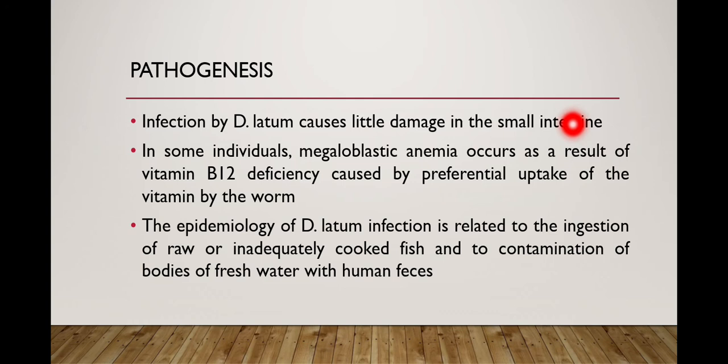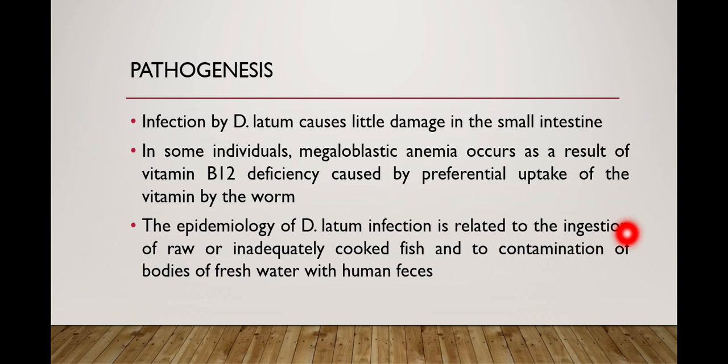Regarding pathogenesis: infection by D. latum causes little damage in the small intestine, but in some individuals megaloblastic anemia can occur as a result of vitamin B12 deficiency. This is caused by preferential uptake of vitamin B12 by the worms, because D. latum preferentially feeds on vitamin B12, leading to deficiency which results in megaloblastic anemia.